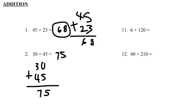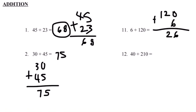Number 11: 6 plus 120. Let's align the numbers vertically like the problems before so it's easy for us to add. 120 plus 6. It's easier to solve when you put the bigger number on top. 0 plus 6 equals 6. We bring down the 2 and we bring down the 1. Our final answer is 126. 6 plus 120 equals 126.